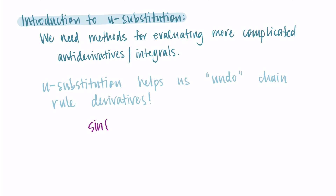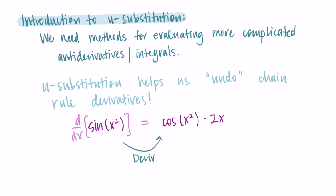Let's consider an example. Suppose we're taking the derivative of sine of x squared. The outside function is sine and the inside function is x squared. So I take the derivative of the outside function — that's cosine — leaving the inside function alone, x squared, and I multiply by the derivative of the inside function, 2x. So the derivative of sine of x squared is cosine of x squared times 2x. This is our derivative using the chain rule.